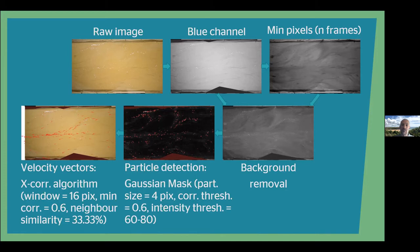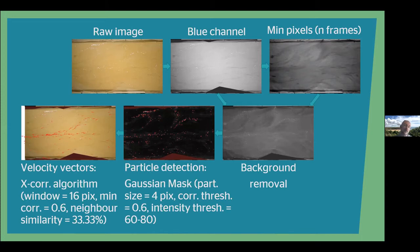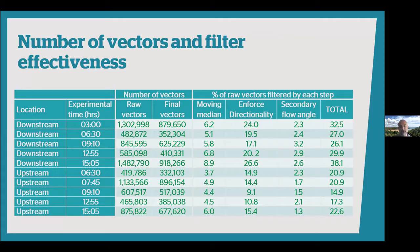Having subtracted the minimum image, I then detected particles using a standard Gaussian mask with a particle size of about 4 pixels, a correlation threshold of 0.6, and an intensity threshold of 60 to 80. This then went into a standard cross-correlation algorithm with a window size of 16 pixels, minimum correlation of 0.6, and a neighbour similarity percentage of 33.33%, meaning one vector out of every three needed to be similar to its neighbours to be accepted. Because seeding was uneven, I ensembled all vectors into a single velocity field for each time period.